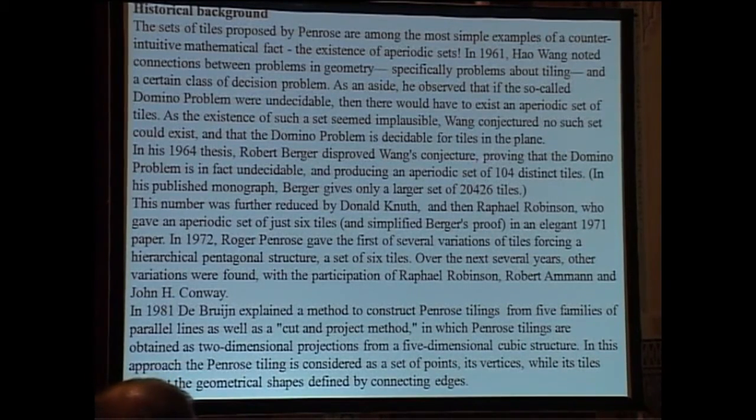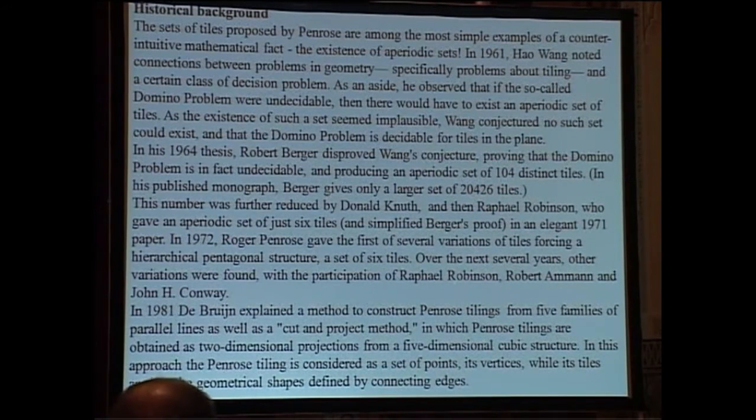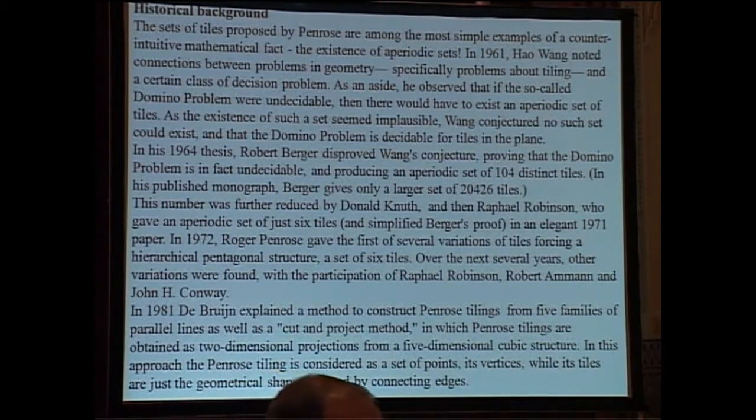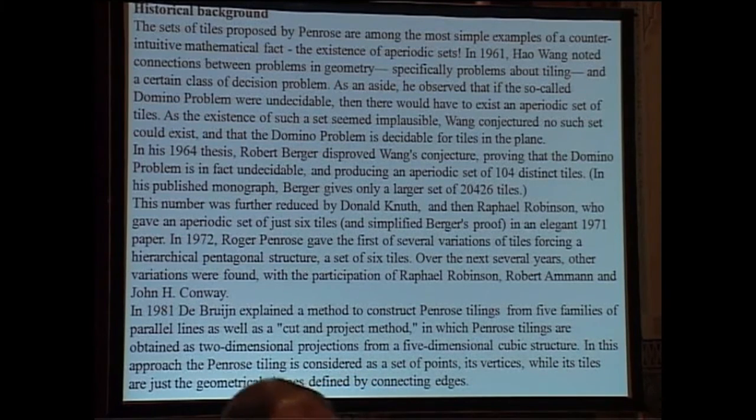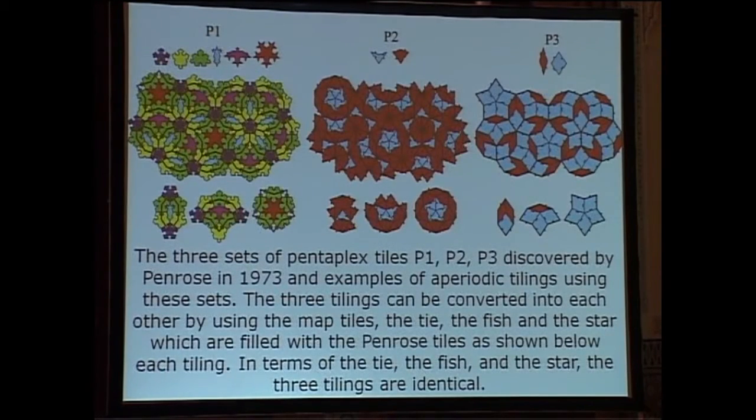Now, the aperiodic tiling, the mathematicians at first found answers in terms of something like 20,000 tiles. They said the answer is yes. But I have to use 20,000 tiles. Then they reduced it to 104. And Penrose reduced it to only two tiles. So, he answered this problem. He said yes. The minimum number of tiles that will cover the plane up to infinity, aperiodically, is only two. And this gives rise to quasi-symmetry, local pentagonal symmetry. So, this is the important point.